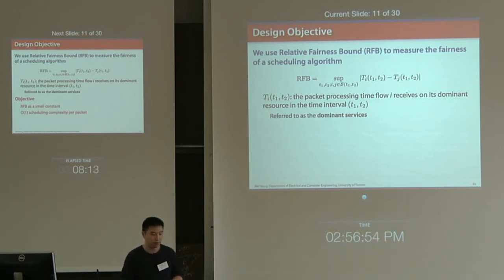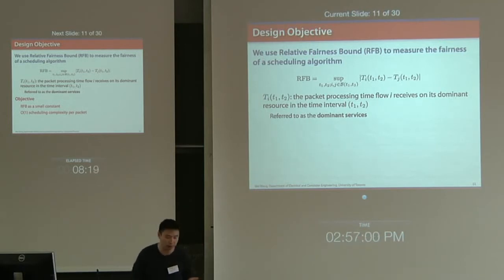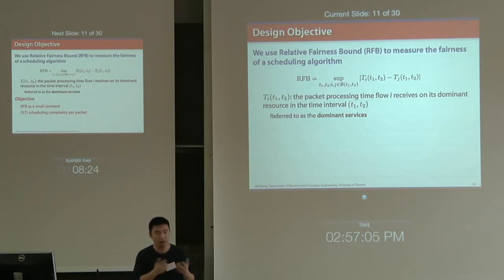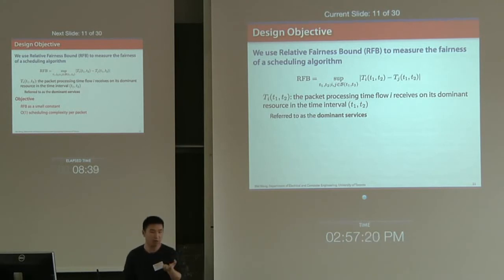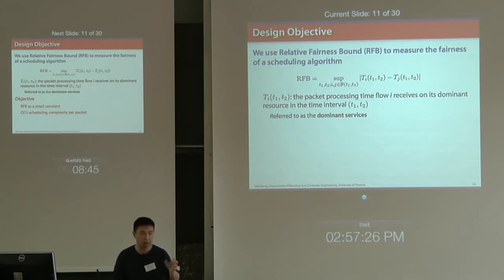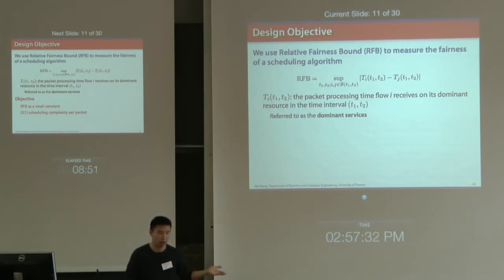To measure fairness of a scheduling algorithm, we use a metric called the Relative Fairness Bound, or RFB. Given any arbitrarily chosen time interval T1 to T2, let a_i(T1, T2) be the processing time flow i has received on its dominant resource during that interval. For every time interval, we calculate the service gap between any two traffic flows and upper-bound this gap. The resulting metric measures the fairness of the scheduling algorithm. Obviously, the smaller the RFB, the more fair the algorithm.